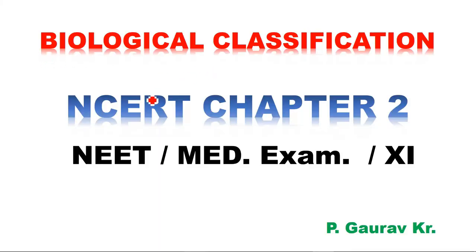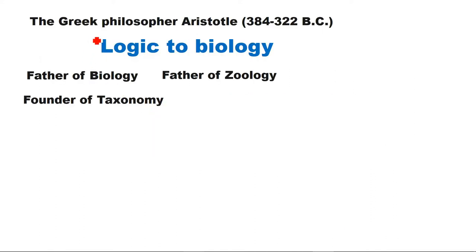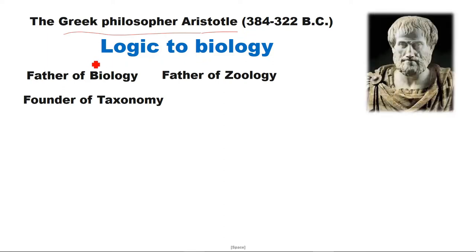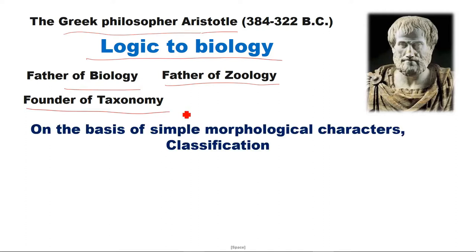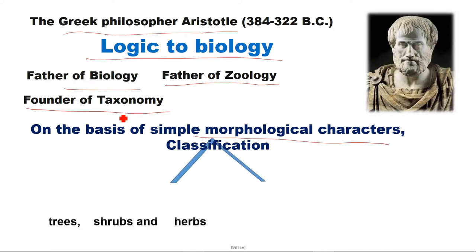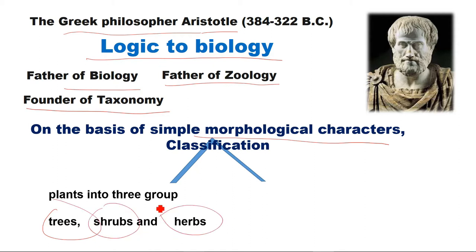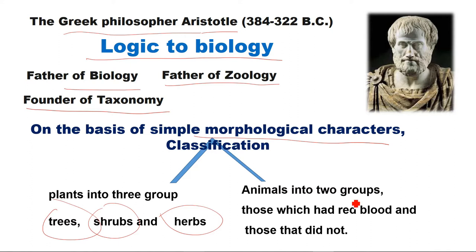Today's topic is Biological Classification — this is the second chapter. When we talk about the Greek philosopher Aristotle, he was the father of biology. He classified all plants into 3 parts: tree, shrub, and herbs. All animals are divided into 2 parts: red-blooded animals and animals without red blood.